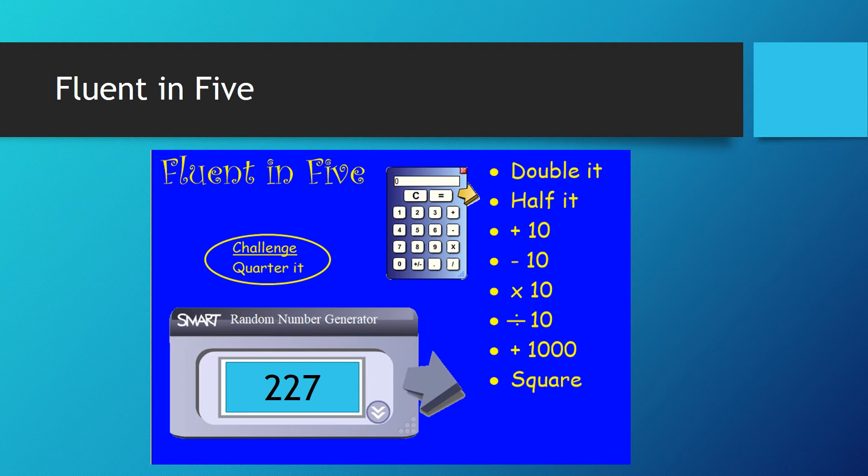To square it is 227 times 227, which equals 51,529. Well done if you got that one. And the final one, 227 divided by 4, the quarter challenge, is 56 remainder 3, or 56.75, or 56 and three quarters. Well done if you got those right.